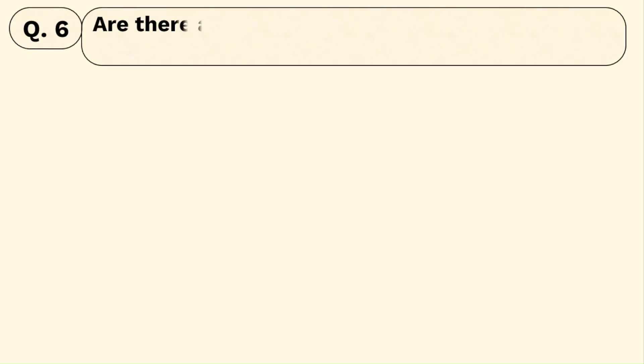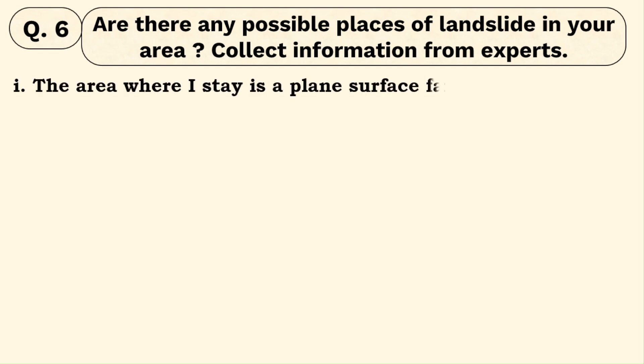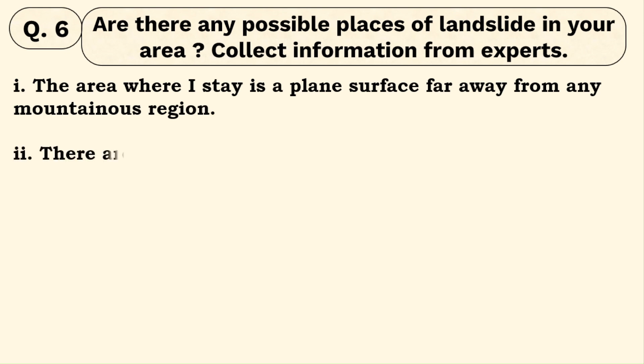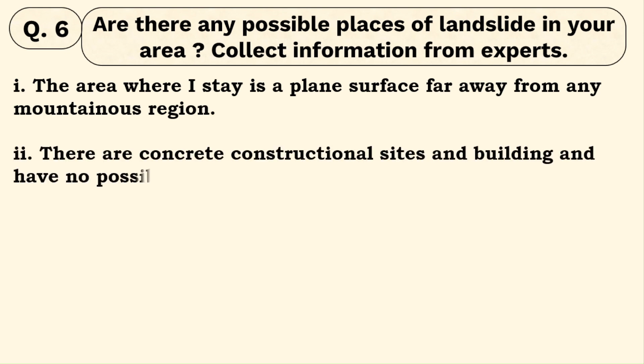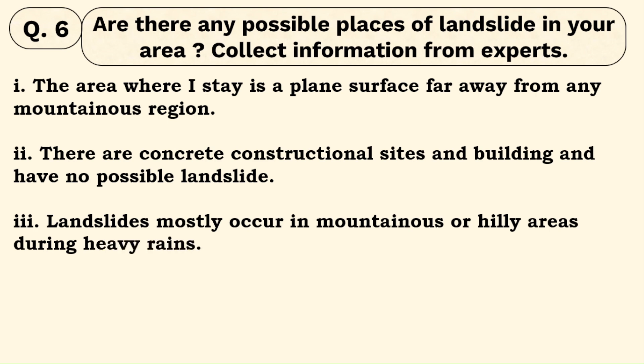Question number six: are there any possible places of landslide in your area? The area where I stay is a plain surface, far away from any mountainous region. There are concrete construction sites and buildings and there is no possible landslide. Landslide mostly occurs in mountainous or hilly areas during heavy rains. This is a general answer for a student living in an urban area — if you live in a mountainous or hilly region, the answer will change for you.